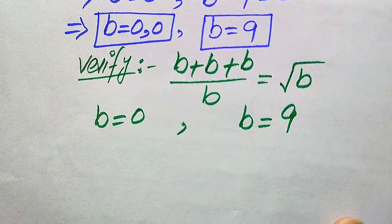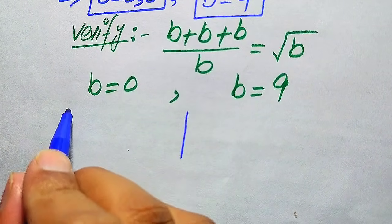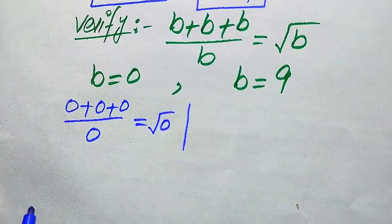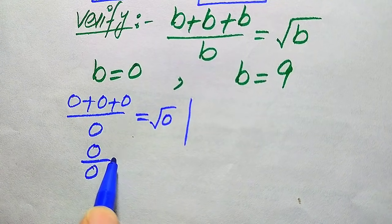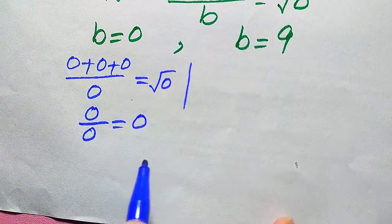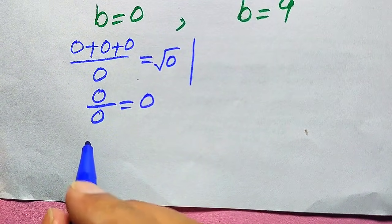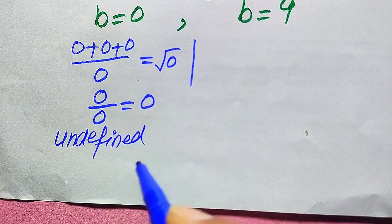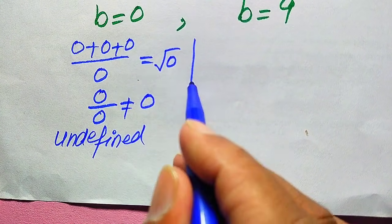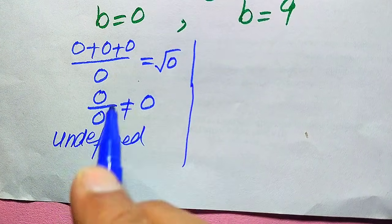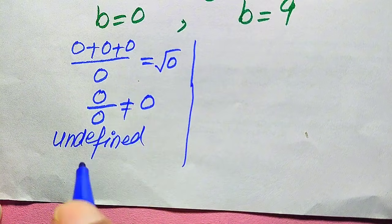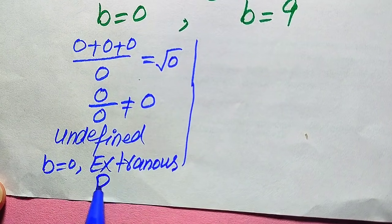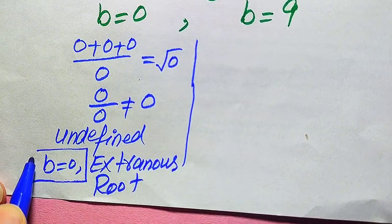When we substitute B equals 0, we get 0 plus 0 plus 0 divided by 0 equals square root of 0, which gives 0/0 equals 0. The left-hand side is a 0/0 indeterminate or undefined form. Since both sides are not equal, B equals 0 does not satisfy the original equation. Therefore, B equals 0 is an extraneous root of the given equation.